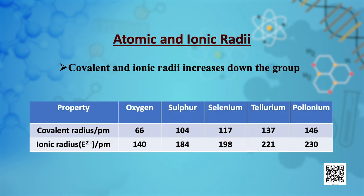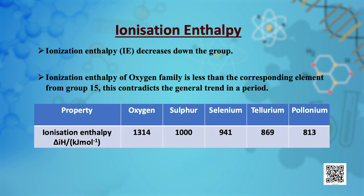Their size increases down the group due to an increasing number of shells. As a result, ionization enthalpy decreases down the group. The ionization enthalpy of the oxygen family is less than the corresponding elements of group 15, which contradicts the general trend in a period. This is due to the extra stable half-filled p orbitals electronic configuration of group 15 elements.